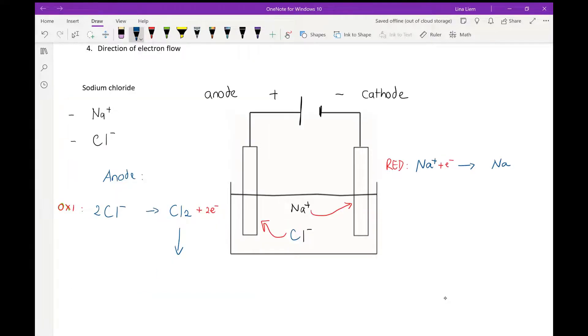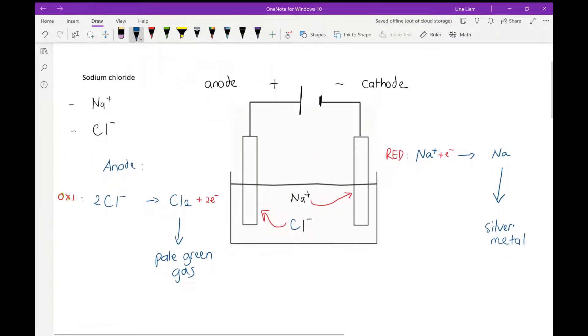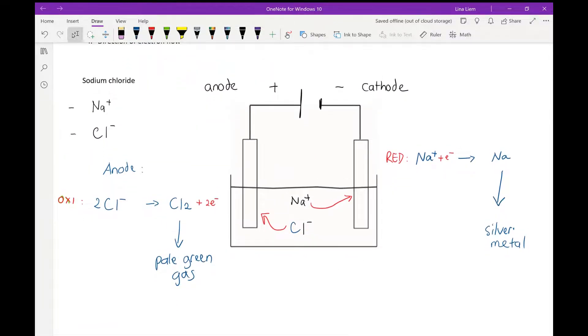Chlorine is a pale green gas. Sodium at this temperature is molten, so it's silvery color of metals.